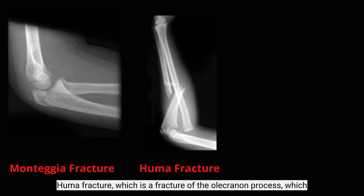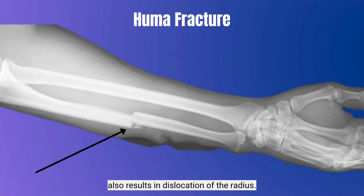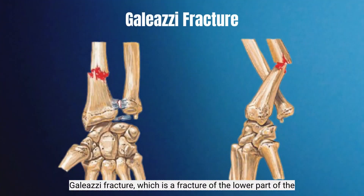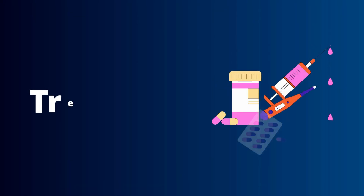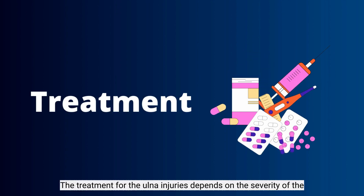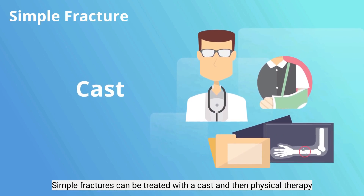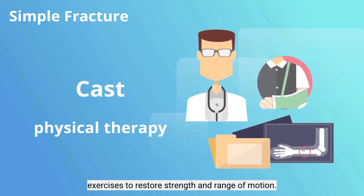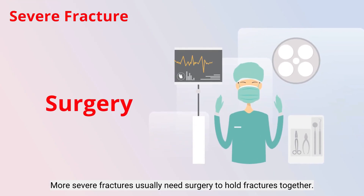Nightstick fracture is a fracture of the olecranon process, which also results in dislocation of the radius. Galeazzi fracture is a fracture of the lower part of the radius bone but results in dislocation from the ulna at the wrist. Treatment for ulna injuries depends on the severity of the injury. Simple fractures can be treated with a cast and then physical therapy exercises to restore strength and range of motion. More severe fractures usually need surgery to hold the fracture together.